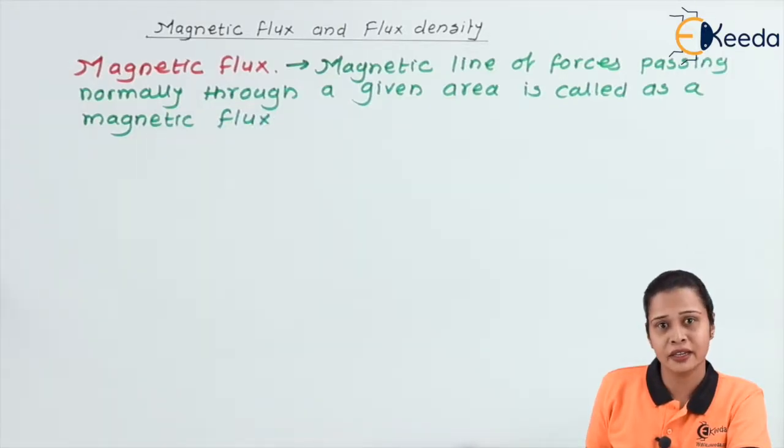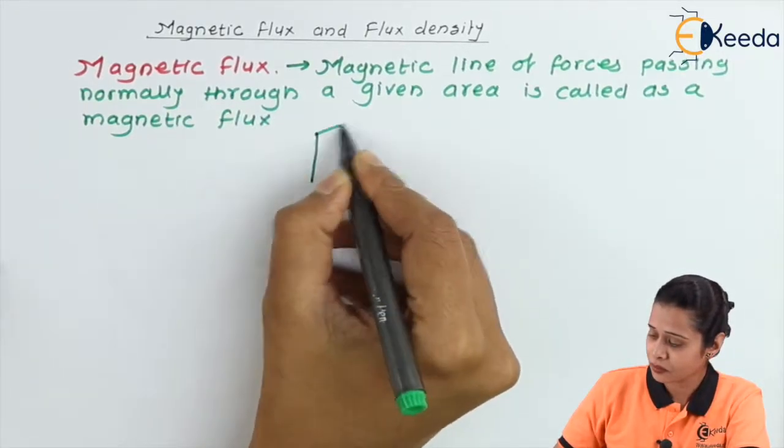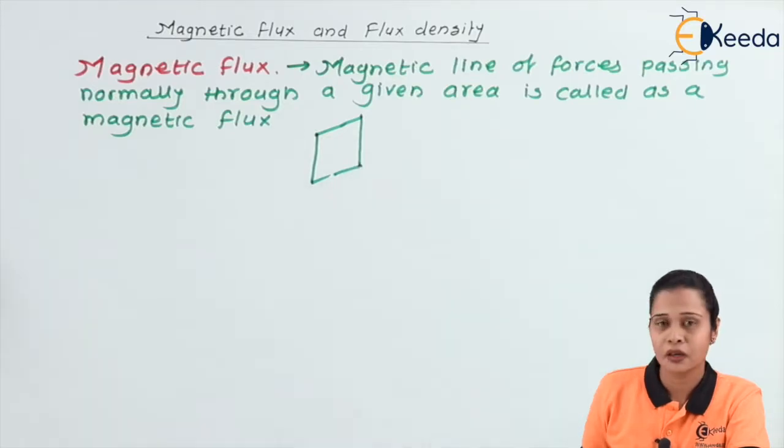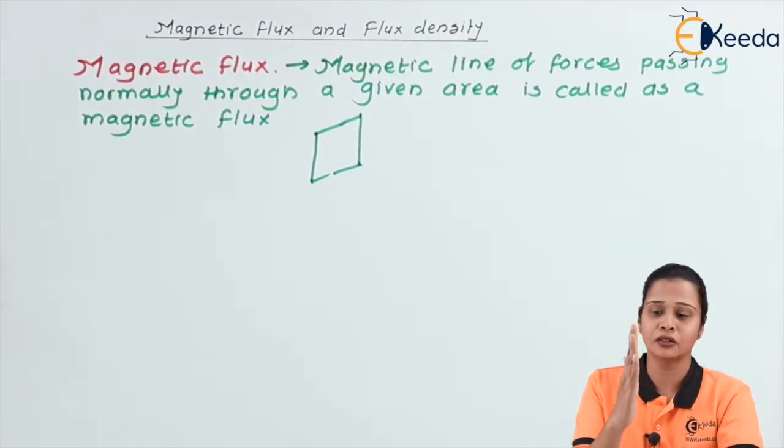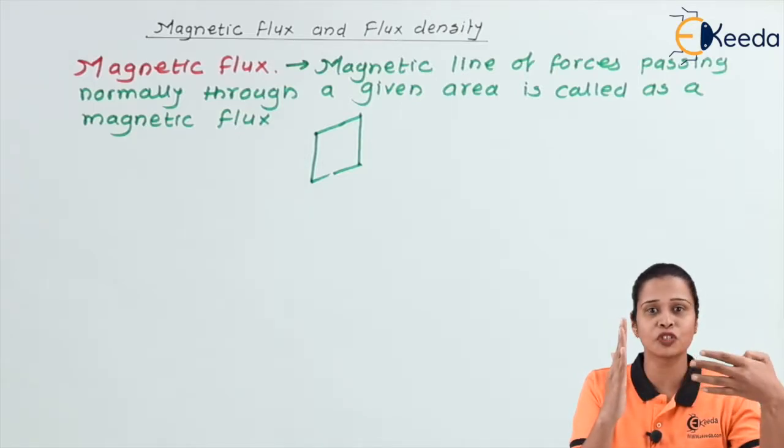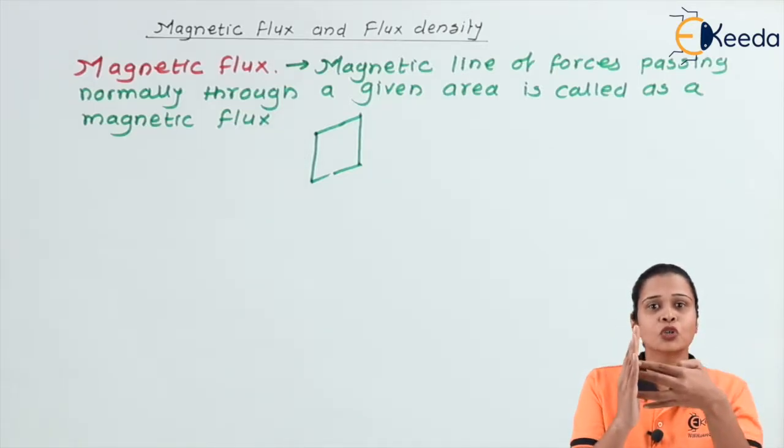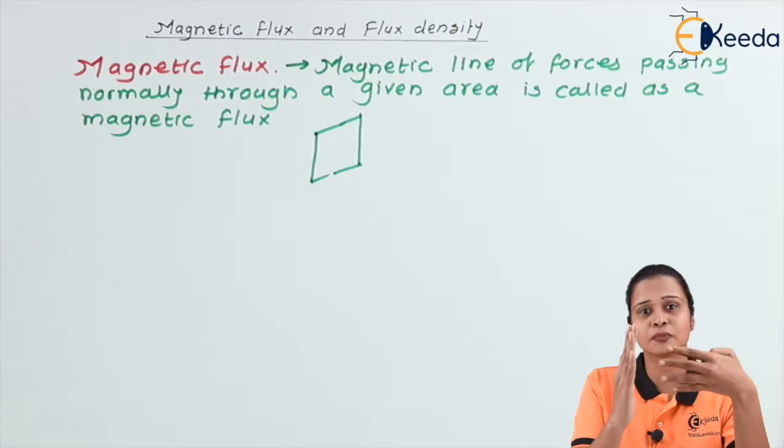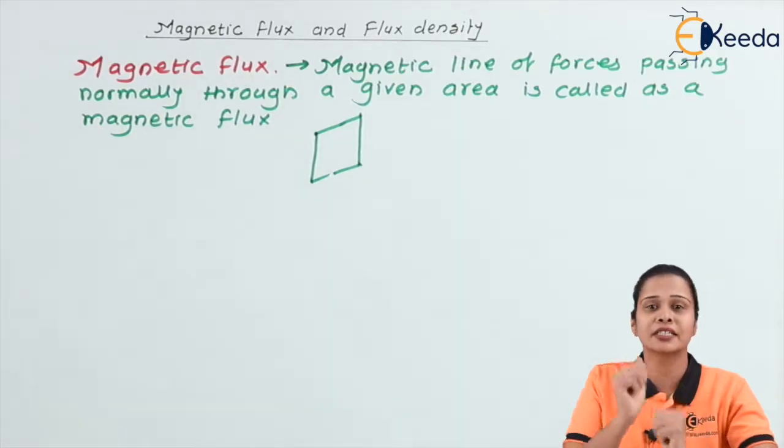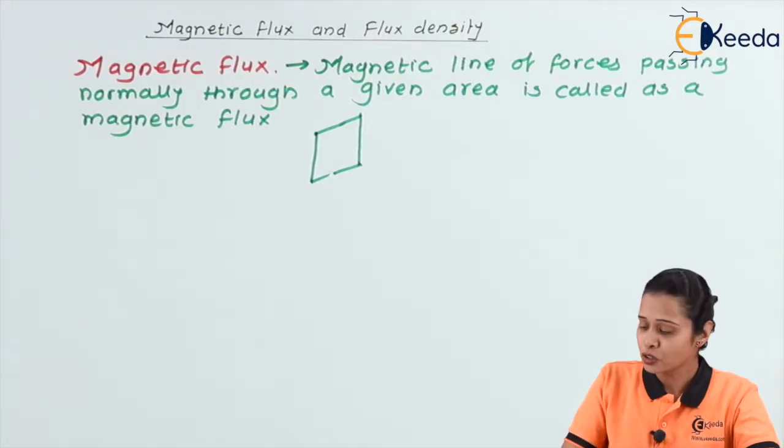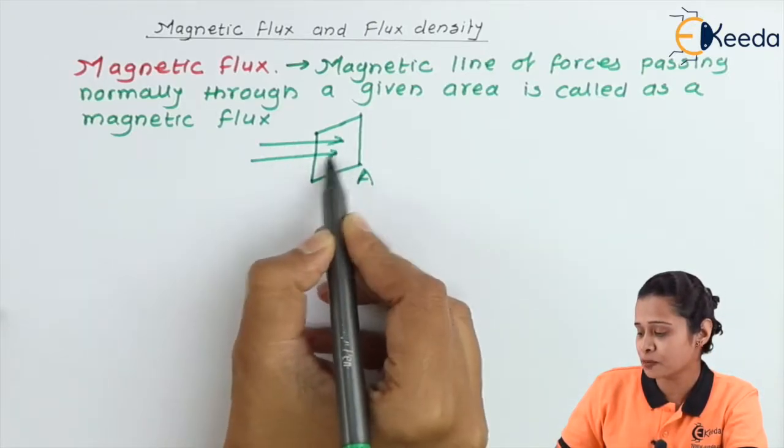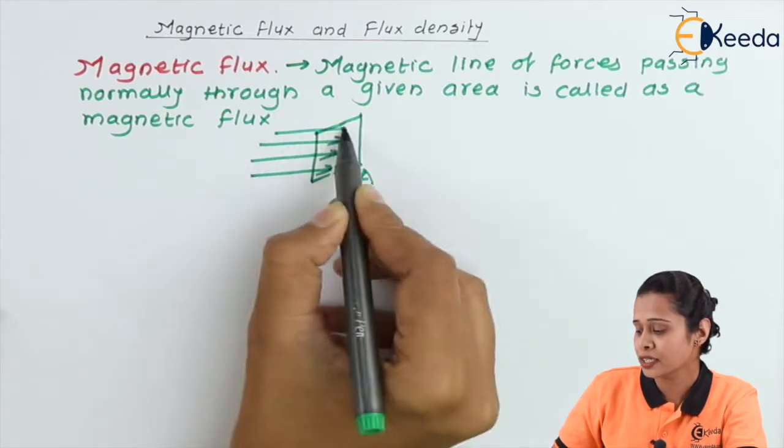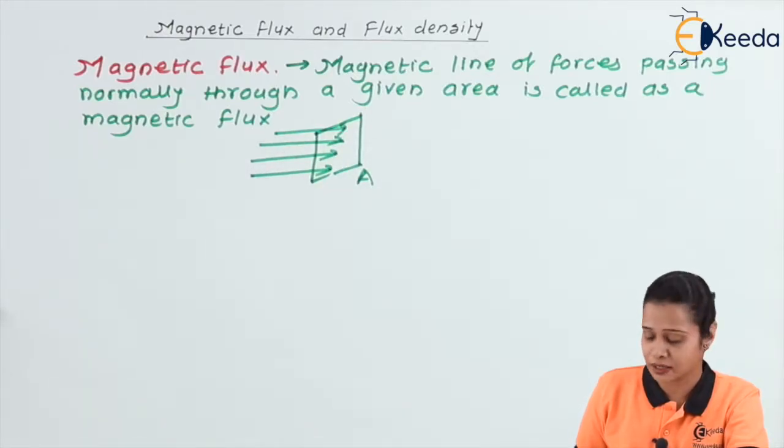Let us consider an area. Suppose I am saying this is the area through which magnetic line of forces are passing. This magnetic line of forces passing through the area is nothing but magnetic flux. We can say suppose this is the area A and the number of line of forces passing through the area is nothing but magnetic flux.